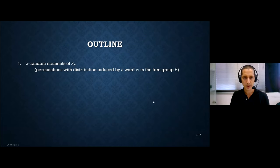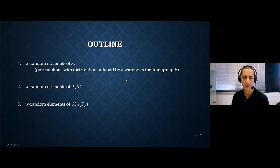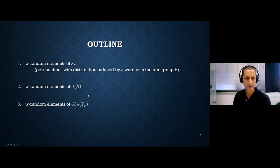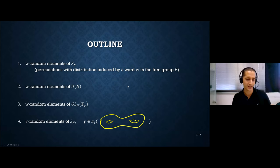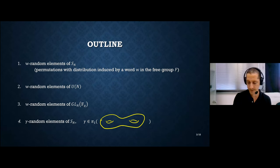Here is the outline of the talk. The first three parts are about measures induced on groups by elements of the free group. First, we'll talk about random permutations, then random unitary matrices, then random elements of the group of invertible matrices over finite fields. The fourth part will be a twist — we'll go back to random permutations, but the measure will be induced by an element of a surface group, not of the free group.